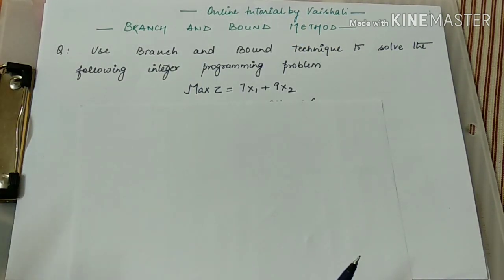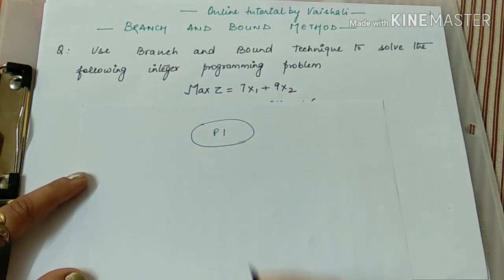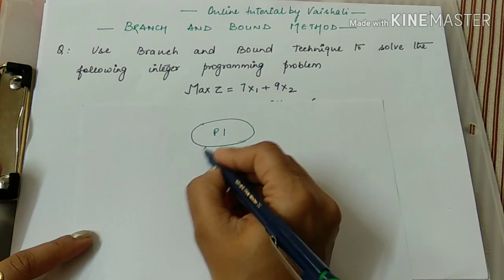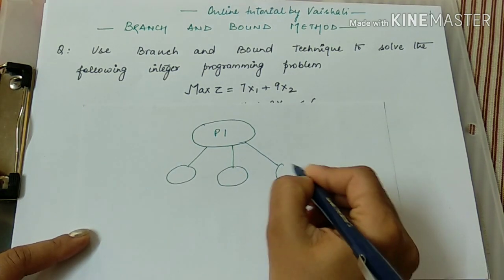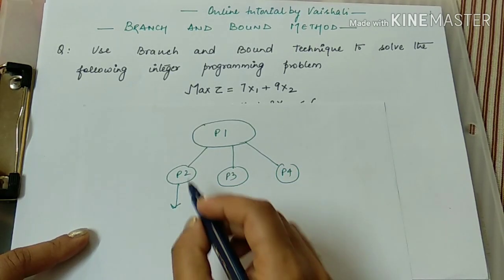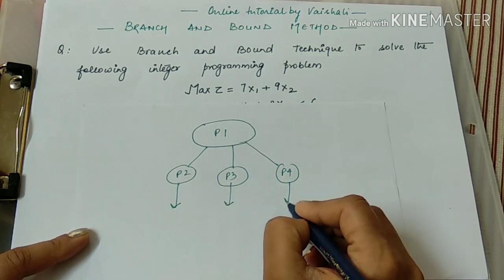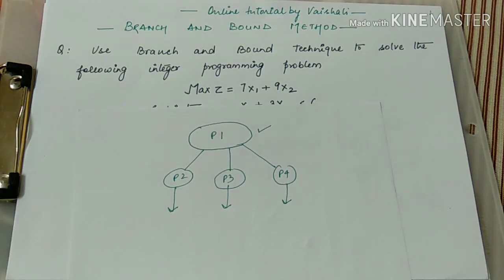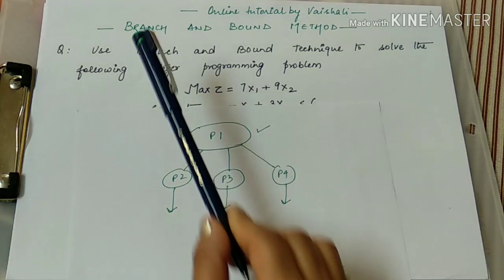Let me explain branching with a small diagram. If we have a big problem — problem one — and I am not able to solve it fully, I divide that problem into small sub-problems: problem two, problem three, problem four. Individually I get the answer of each, and by combining these I can get the answer of problem one. This concept is similar to modularity in computer science — dividing a big problem into sub-problems to obtain the final answer. That is the technique of branch.